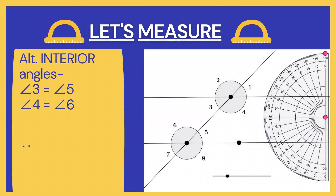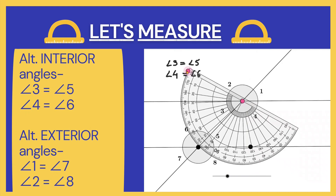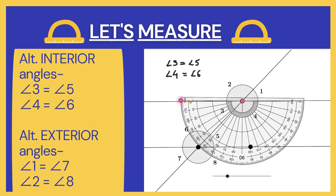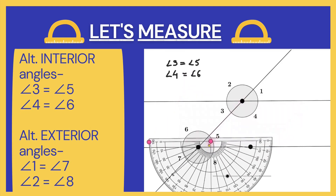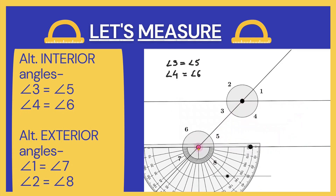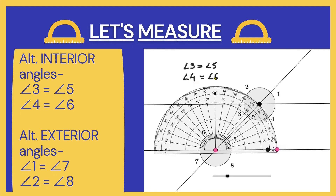Now let's see the proof of alternate angles. In this figure, we can see that angle 3 and angle 5 are a pair of alternate interior angles, so angle 3 must be equal to angle 5. Similarly, angle 4 must be equal to angle 6. Keeping the protractor properly so that the two lines overlap, we can see that angle 3 is 45 degrees. Now, keeping the protractor at the other point to measure angle 5, we can clearly see that angle 5 is also 45 degrees. So angle 3 is equal to angle 5, and similarly angle 4 must be equal to angle 6 as they are alternate interior angles.